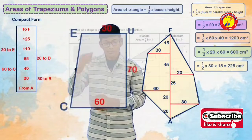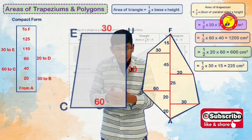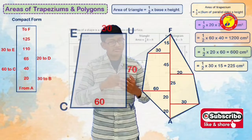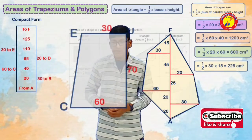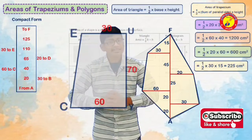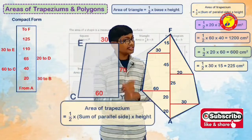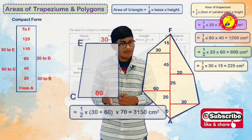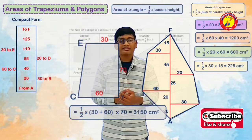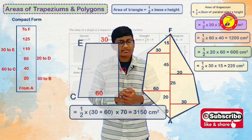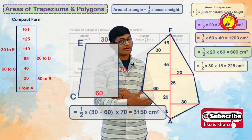So we will go for the trapeziums now. Here we go for the first trapezium. The trapezium has two parallel sides: 60 cm and 30 cm. It has a height of 70 cm. If we calculate half into sum of parallel sides into height — half into 60 plus 30, we get 90 cm, into height 70 cm. After calculation, we will get 3150 cm square.